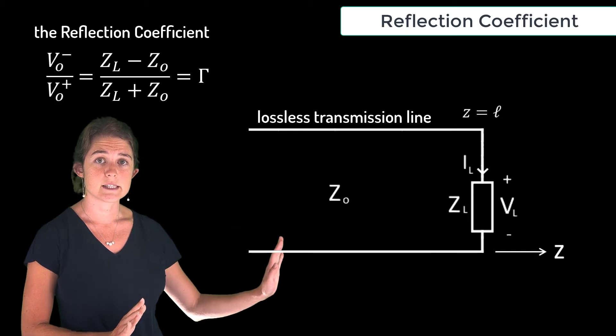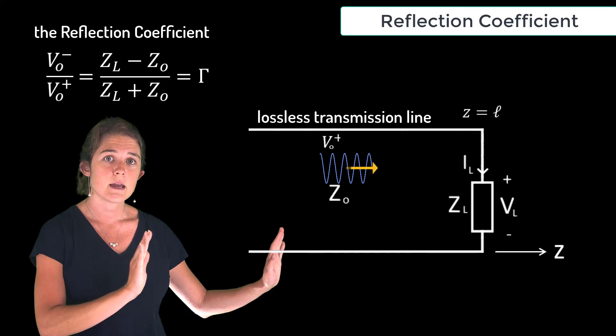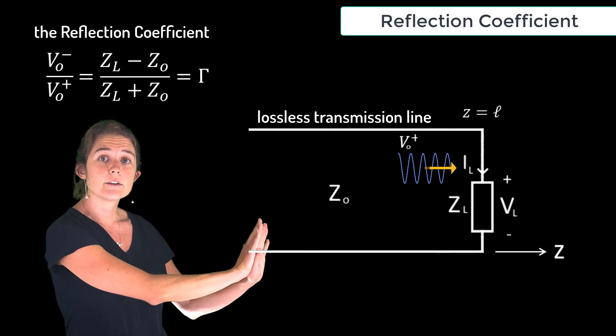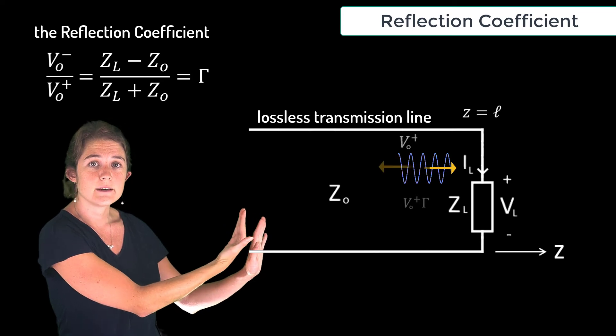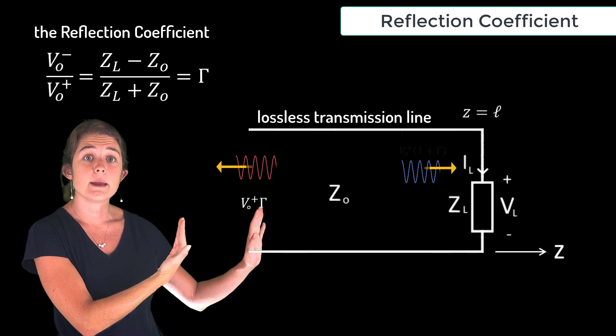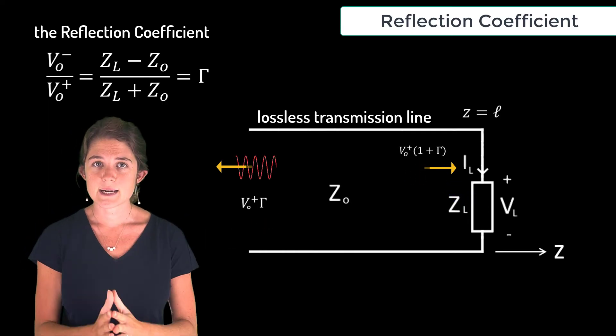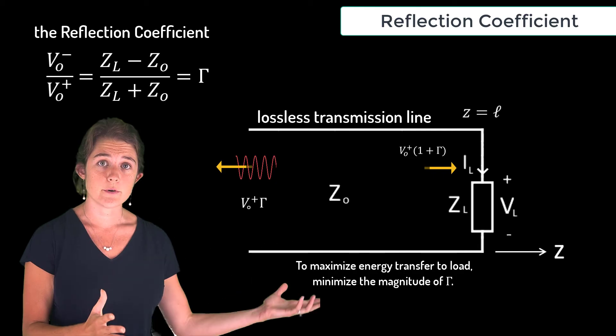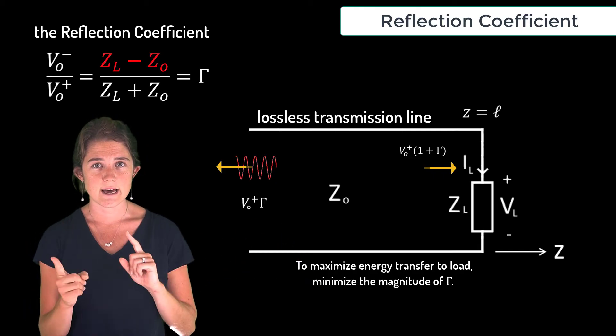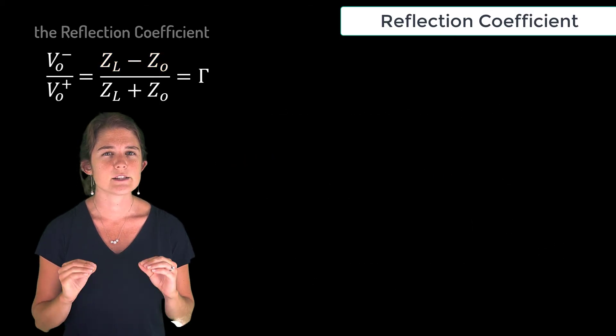So consider this scenario: a transmission line with characteristic impedance z0 is terminated with load impedance of zL. A signal v0 plus is input to the system and travels down the line until it reaches the load. At the load, a portion of the wave is reflected according to gamma times the magnitude of the input voltage. The remainder of the signal is absorbed by the load. So to maximize energy transfer to the load, we want to minimize gamma, which means getting zL as close to z0 as possible.